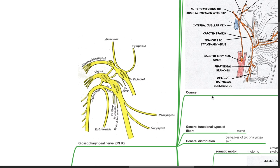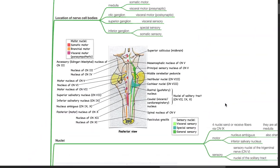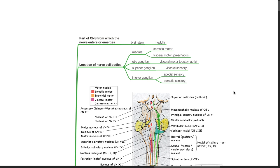Cranial nerve 9, the glossopharyngeal nerve. The glossopharyngeal nerve emerges from the brain stem, the medulla. Location of nerve cell bodies: somatic motor and visceral motor presynaptic is located in the medulla. Visceral motor postsynaptic is located in the otic ganglion. Visceral sensory is located in the superior ganglion. Special sensory and somatic sensory is located in the inferior ganglion.